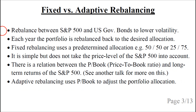So we can rebalance between the S&P 500 and US government bonds to lower the volatility. Each year, the portfolio is rebalanced back to the desired allocation. If the S&P 500 has gained, then we sell some of it and buy more bonds, and vice versa.